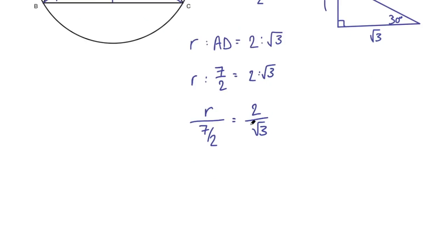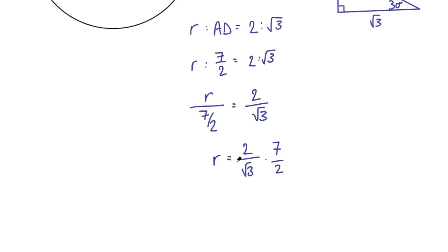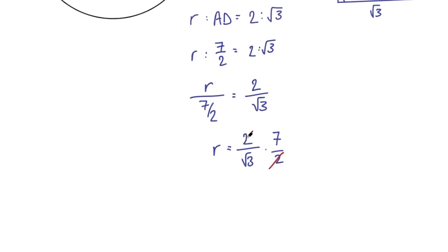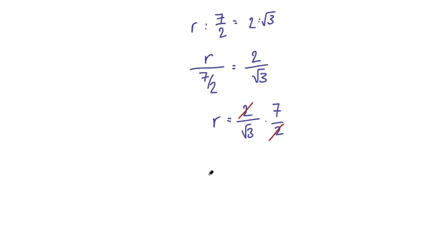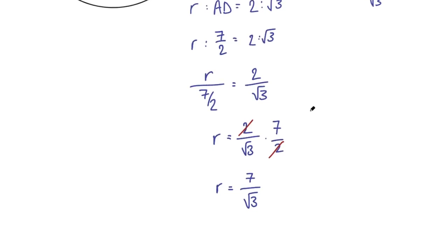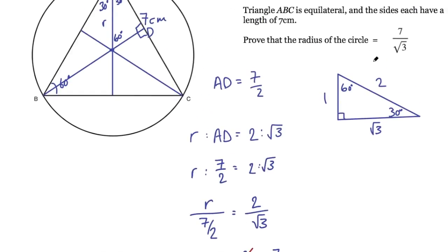To get R by itself, I need to multiply this side by the denominator. So I need to multiply the right hand side by 7 on 2. So R is going to equal 2 on root 3 multiplied by 7 on 2. I'm multiplying fractions so I can cancel these 2s out. And I end up with the radius equal to 7 on root 3, which is what the question asked me to prove.